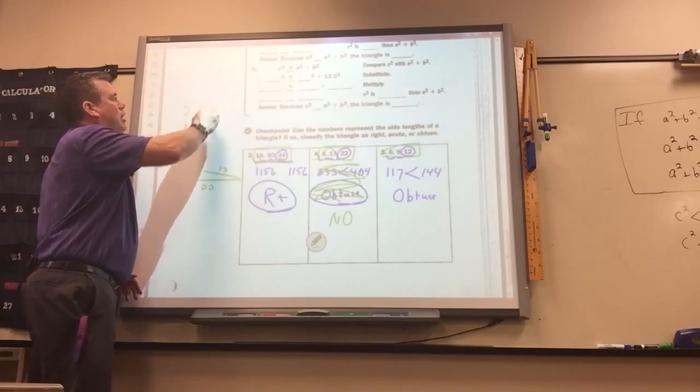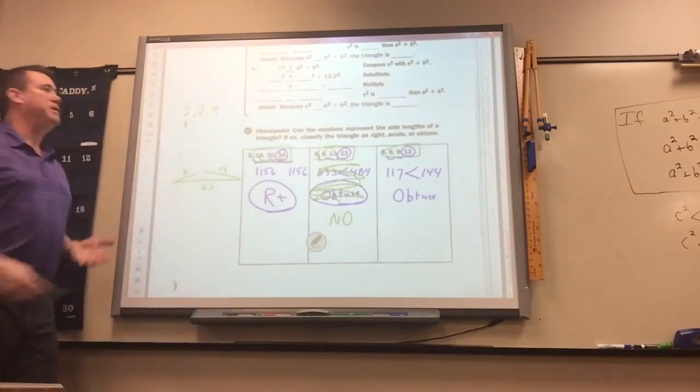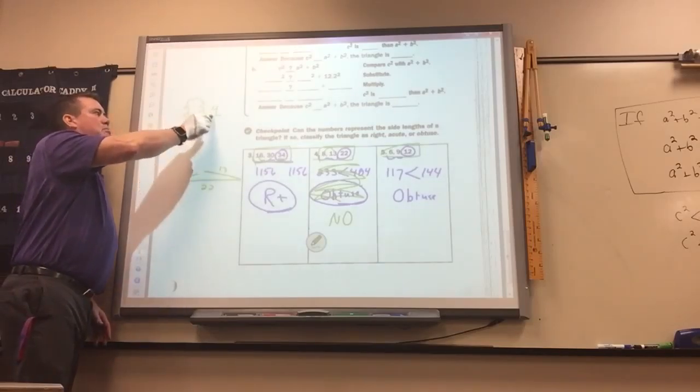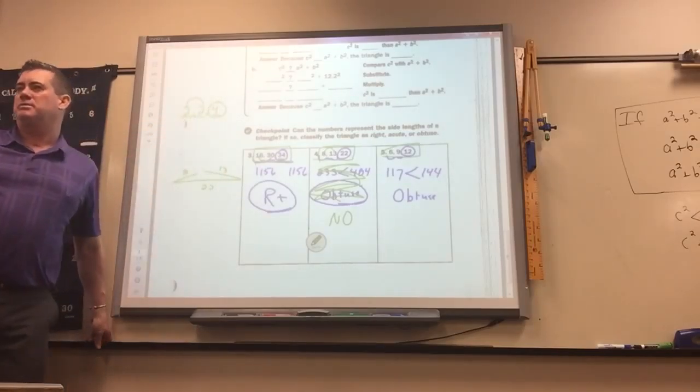An example of one, if you got 2, 2, and 4, that wouldn't work because 2 and 2 are exactly 4. It has to be, they got to add up to more than the third side. So that would be a no.